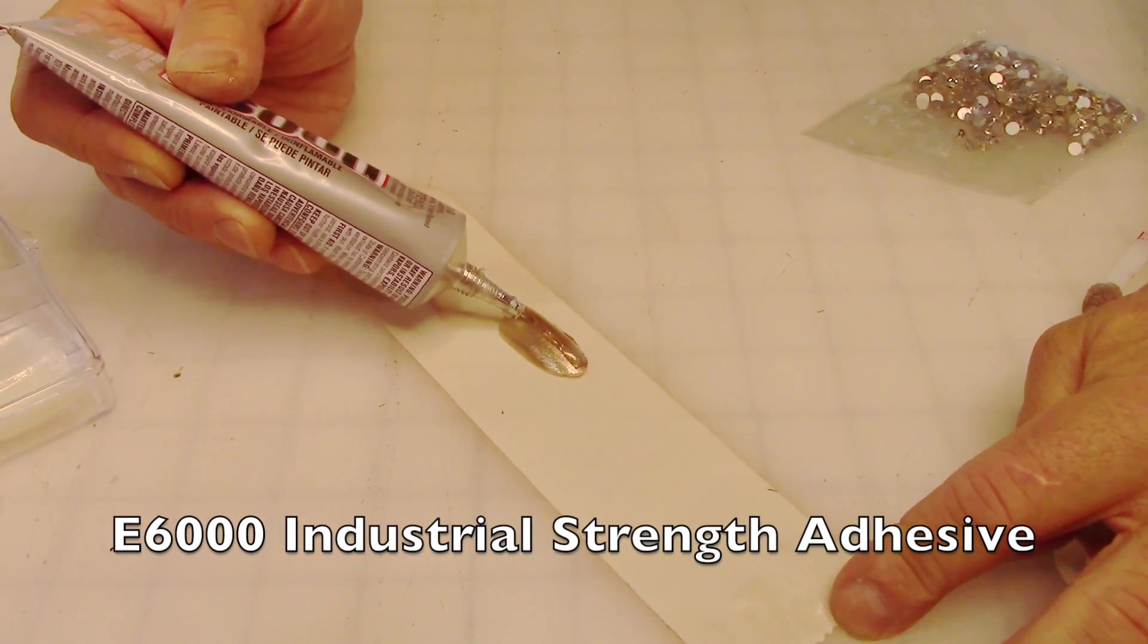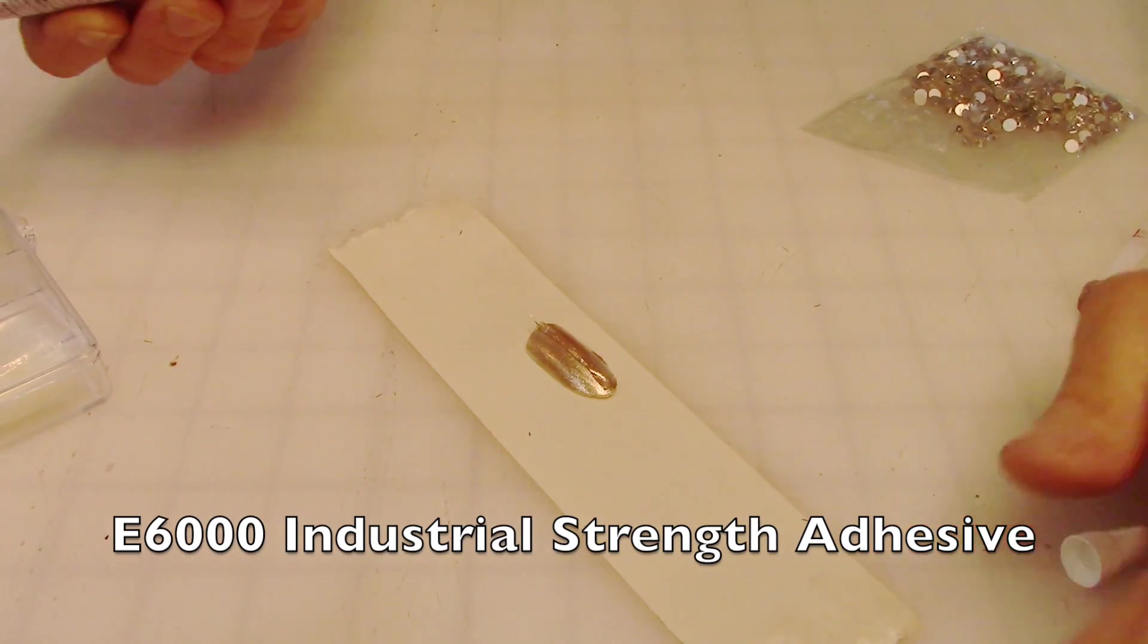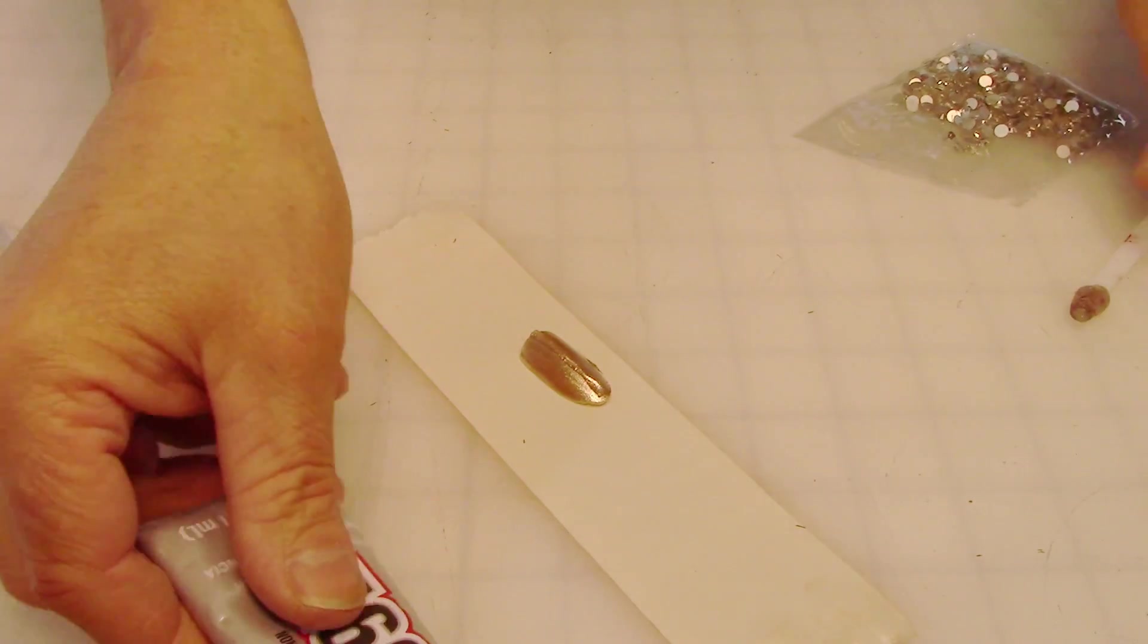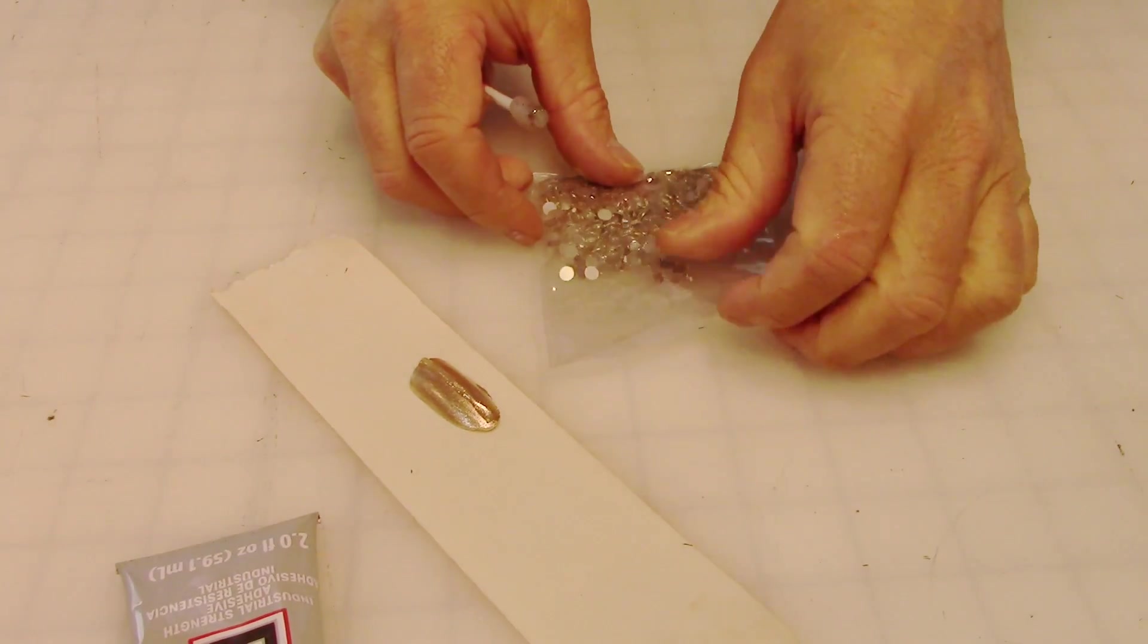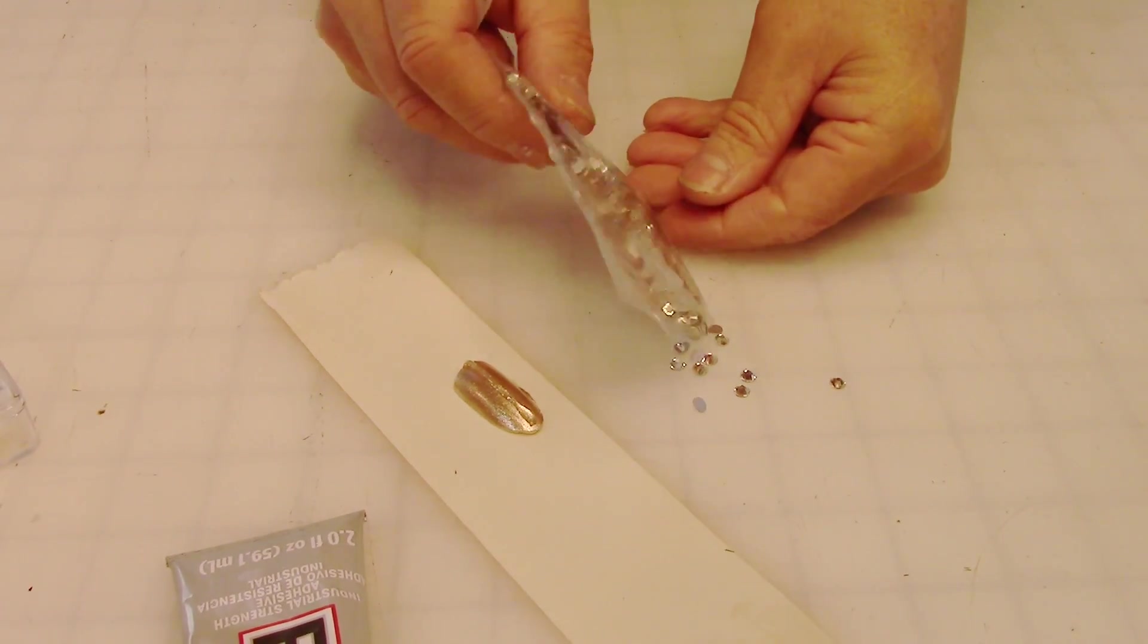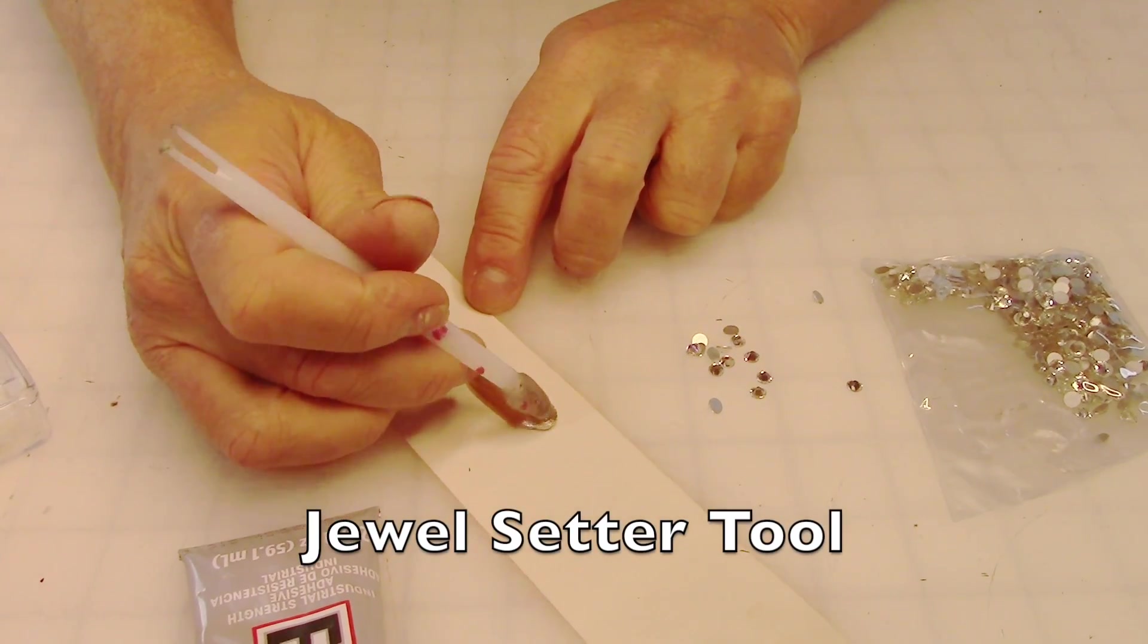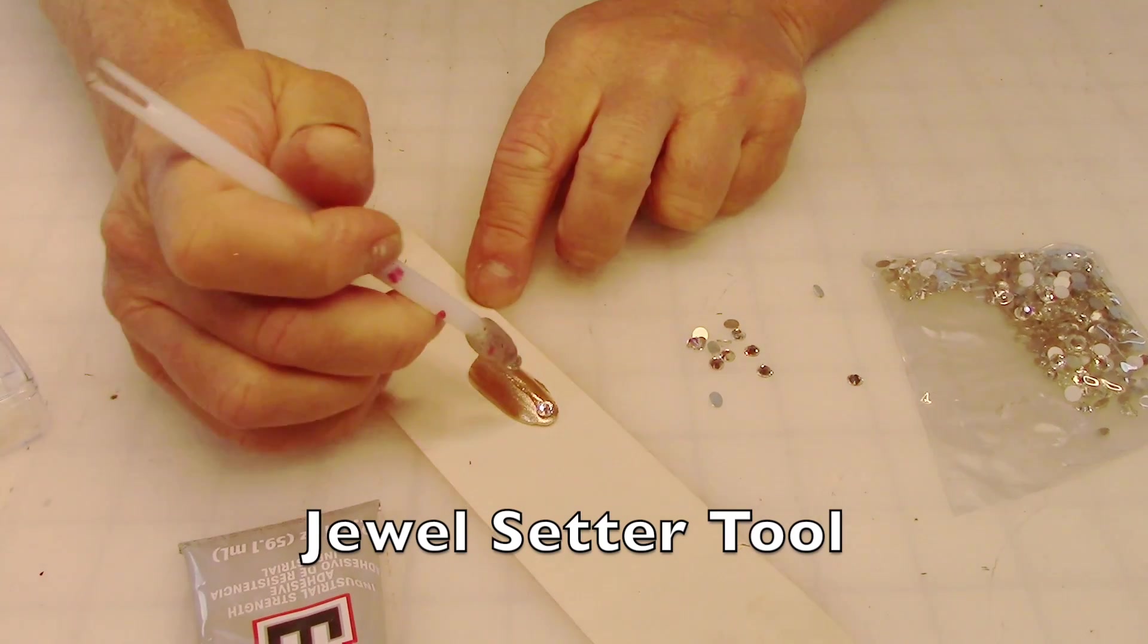All I do is take the E6000 and I make a little line of the E6000 down the center of the nail, and then I just stick rhinestones onto the nail. I let that dry for like a half hour to an hour, and then I just glue the nails on my finger just like I would any other nails.